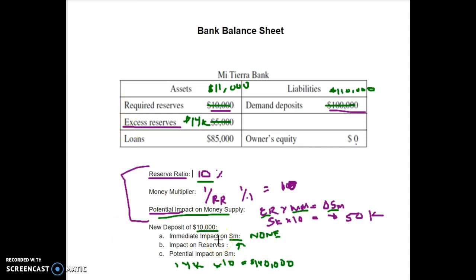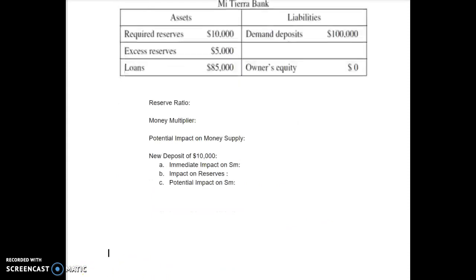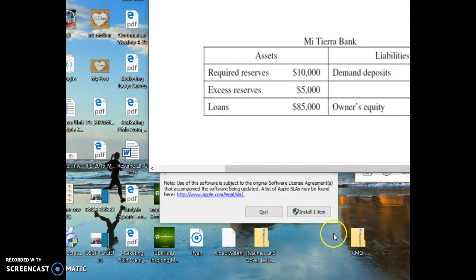Sometimes they'll ask the opposite — a withdrawal of $10,000. What happens to the money supply? No change. What happens to reserves? Both go down. What's the change in the money supply? Use excess reserves times the money multiplier. If there's not enough money for required reserves, the bank can borrow from the Federal Reserve or from another bank to meet their reserve obligations. That's everything you need to know about money supply.